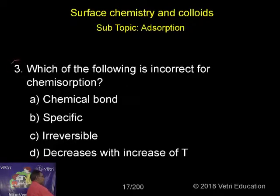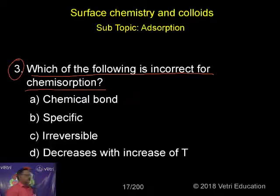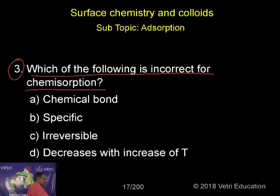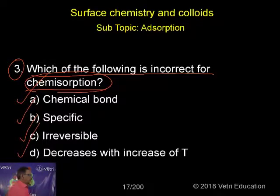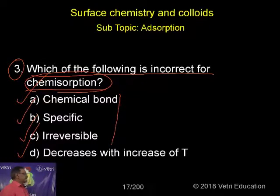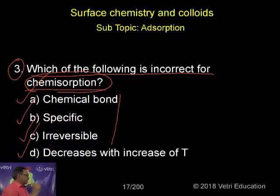Question number three: which of the following is incorrect for chemisorption? If you go through the table, the first three options — formed due to chemical bond, specific in nature, and irreversible — are all characteristics of chemisorption and therefore correct.